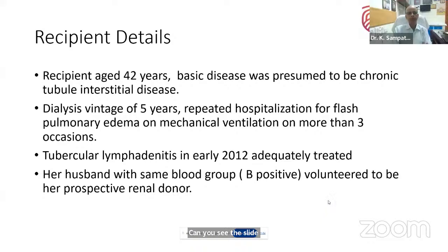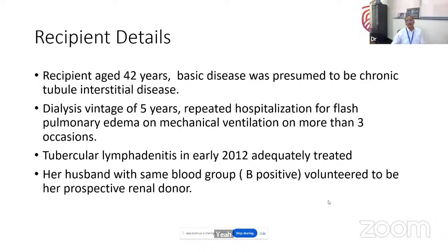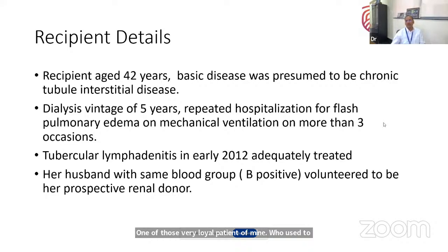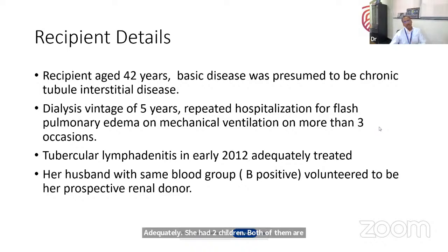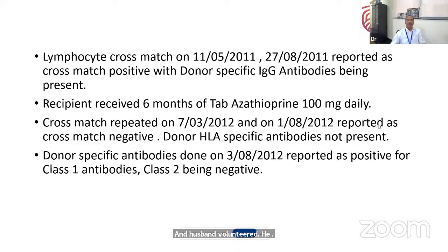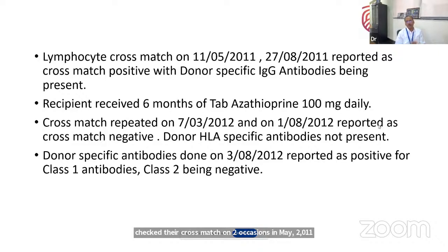I had a female patient, about 42 years old, with presumed chronic tubular interstitial disease who was on dialysis for five years. She was a very loyal patient who came repeatedly with volume overload, was on ventilator on more than two or three occasions. In 2012, she developed tubercular lymphadenitis, which was treated adequately. She had two children who were teenagers and didn't want to donate. Her husband volunteered and coincidentally had the same blood group. Unfortunately, when cross-match was checked on two occasions — May 2011 and August 2011 — both times it came positive.